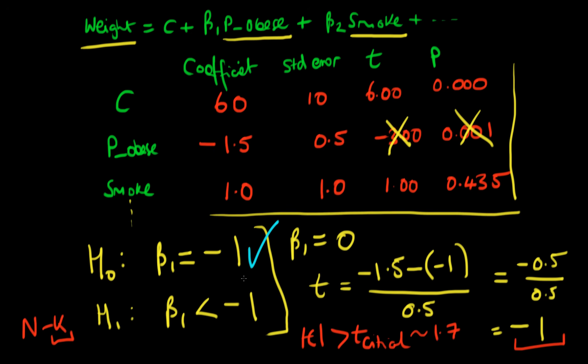So in fact given our new data or given our new research that we've done, we can't conclude that beta one, the effect of obesity on an individual's weight in kilograms, is statistically different from minus one.